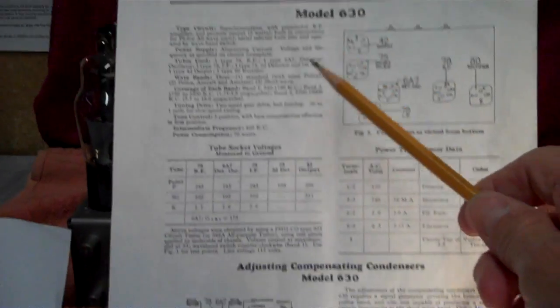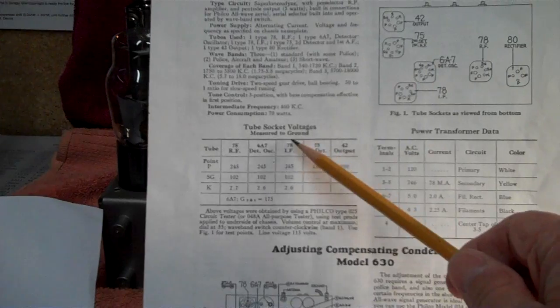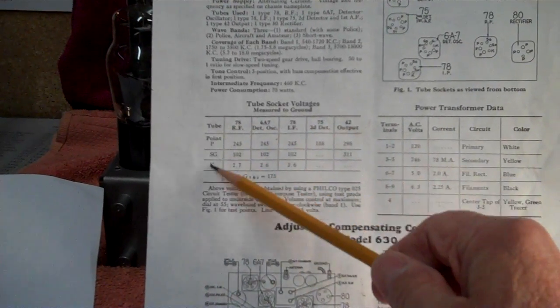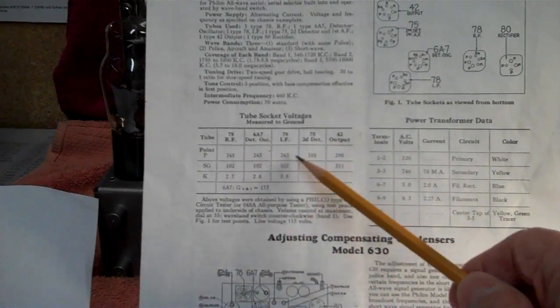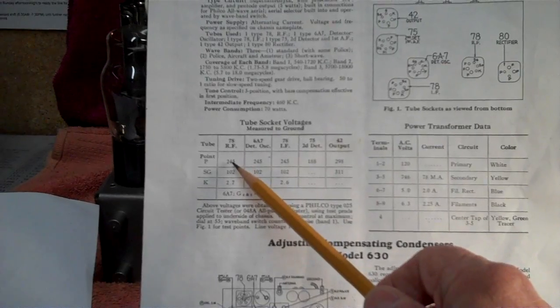on this Philco service bulletin we have here, it says tube socket voltages measured to ground. And then it gives the tubes right here. Most of your documentation will have that. They'll tell you at what point, on what tube, and what voltage you should get.